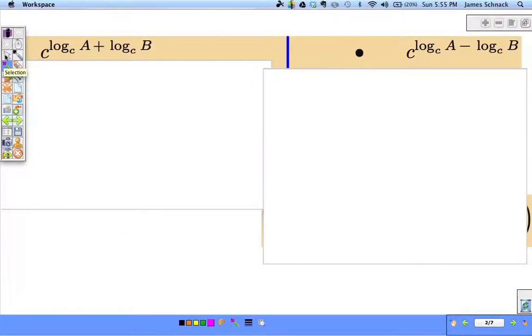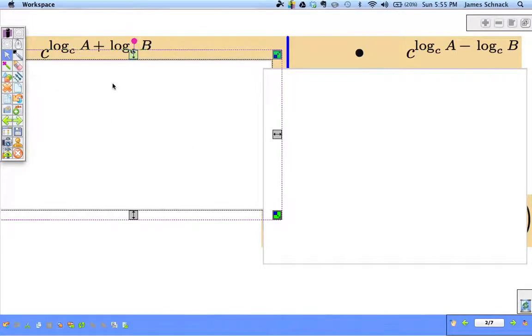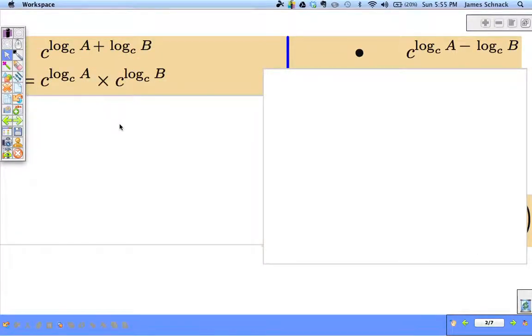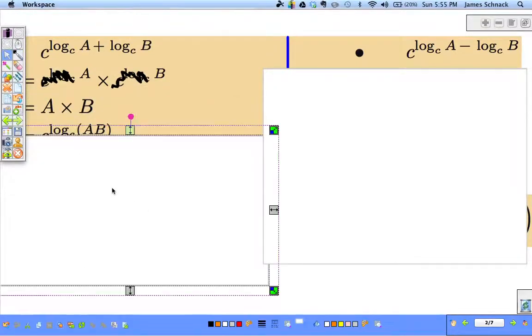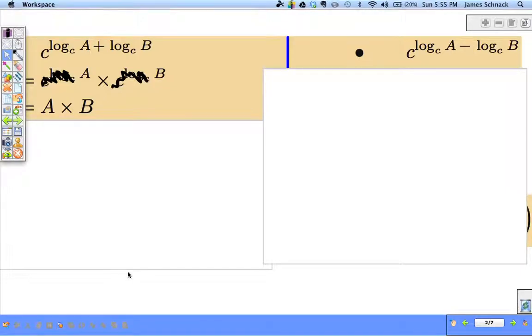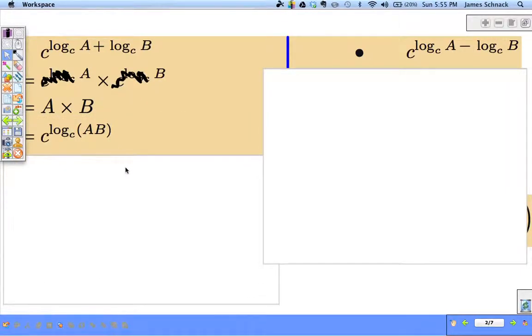Now let's look at proof. So let's say we start with C to the log A plus log B. Using properties of exponents, we know that we can split this into C to the log A times C to the log B. Now something we discovered about logarithms is C log C and C log C will undo each other, leaving us with A times B. And since we're talking logarithms, let's jump back into log form, C log C of A times B.